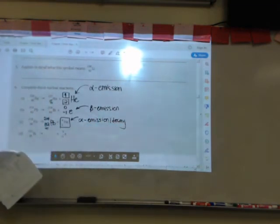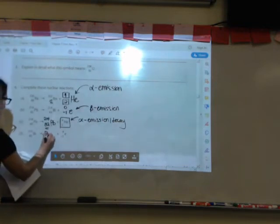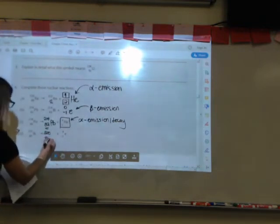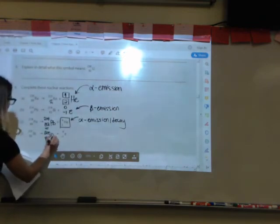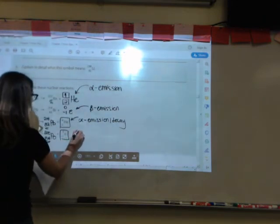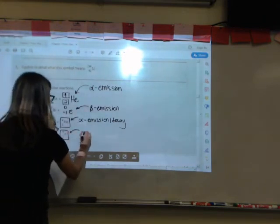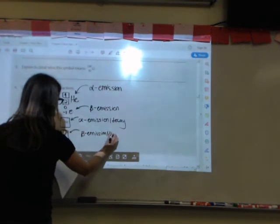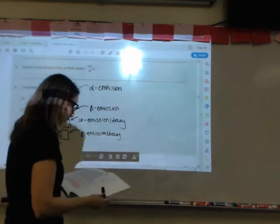For D, 0 plus what number is 210? 210. Negative 1 plus what number is 83? 84. Look at number 84 on the periodic table, and it is PO, polonium. Since this is a beta particle, because it's an electron, this is beta emission, or beta decay.